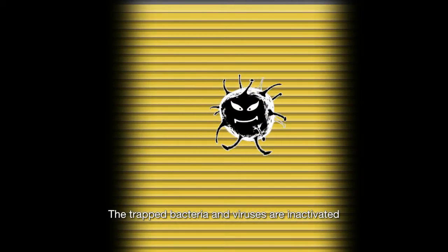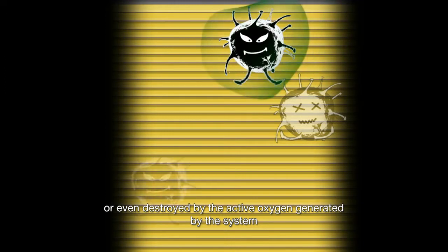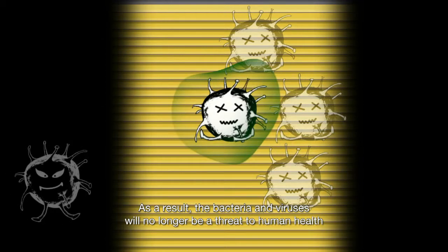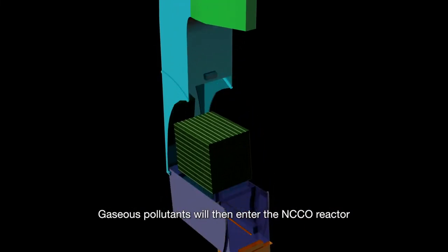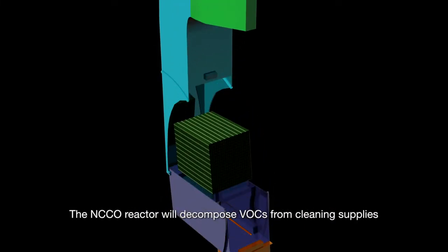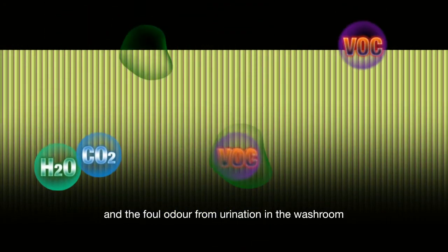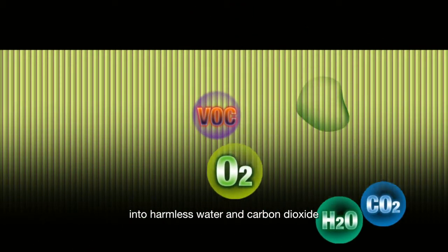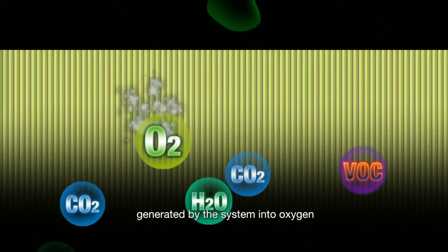The trapped bacteria and viruses are inactivated or even destroyed by the active oxygen generated by the system. As a result, the bacteria and viruses will no longer be a threat to human health. Gaseous pollutants will then enter the NCCO reactor. The NCCO reactor will decompose the VOCs from cleaning supplies and the foul odour from urination in the washroom into harmless water and carbon dioxide. It will also decompose any excess ozone generated by the system into oxygen.